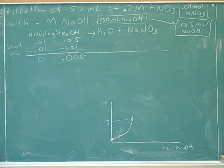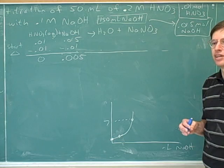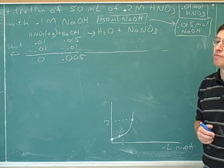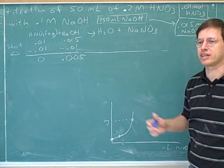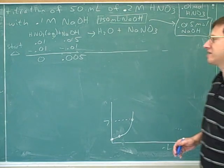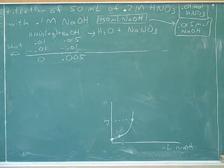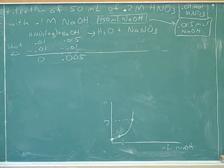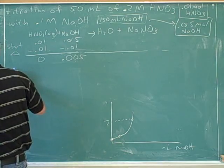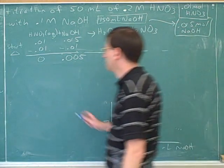Since NaOH is a strong base, we have excess base left over, so we expect the pH to be basic. That's a good test-taking strategy: check whether the answer should be acidic, basic, or neutral first — maybe only one answer choice is basic, saving you all the work. To finish the calculation, find the pOH from the excess hydroxide concentration, then subtract from 14 to get pH. The pOH comes out between 2 and 3, giving a pH between 11 and 12.